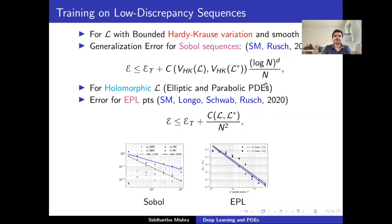If this holds, we only need 100 training samples instead of 10,000. In fact, if your target function is complex analytic — holomorphic in a suitable sense, as is typical for solutions of elliptic and parabolic PDEs with the right boundary data — then with special low discrepancy sequences the decay is even faster, almost quadratic. Using these as training points makes the problem much more feasible and tractable.